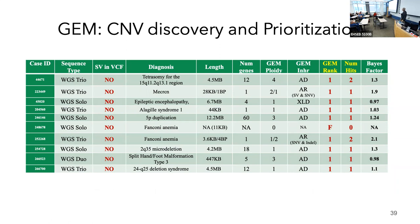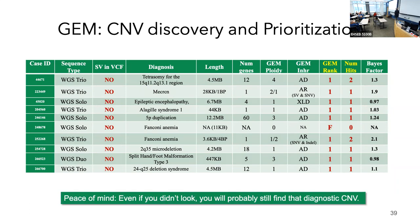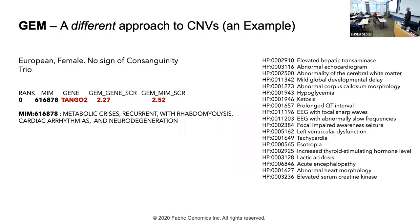GEM identified 13 of 14 causative CNVs without any access to a BAM or external CNV calls — which provides peace of mind that even without looking you're likely to find the diagnostic CNV. This is especially useful for reanalysis of older cases where no diagnostic candidate was found — if you have the legacy VCF file, GEM can discover CNVs with high accuracy even in the absence of any structural variant calls.